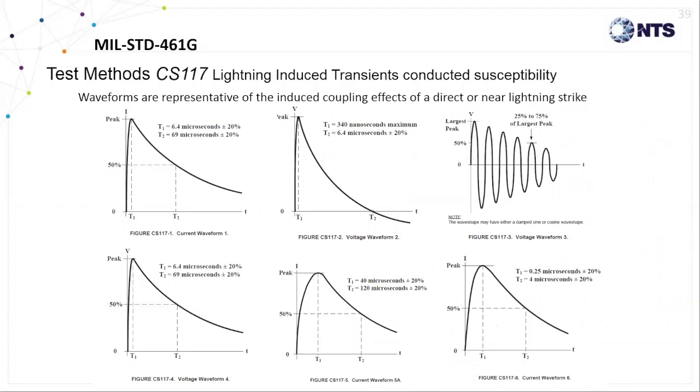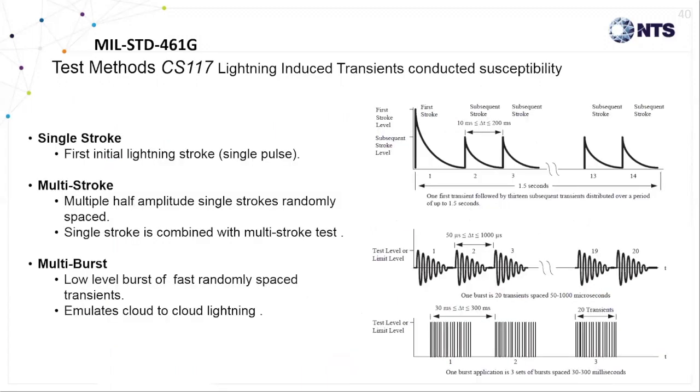Here are the six types of lightning waveforms that will be selected. Each are representative of the induced coupling effects of a direct lightning strike. Variations in this waveform rise time and duration are caused by that transfer function and impedance of the aircraft fuselage material. Damped oscillatory waveforms are representative of an aircraft resonance occurring along portions of the external platform structure.